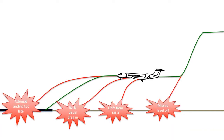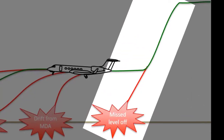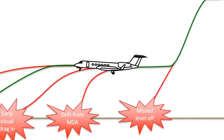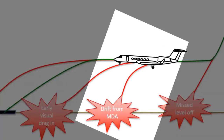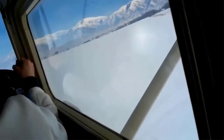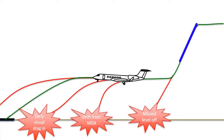Here you can see some of the common pilot errors when conducting the dive-and-drive technique. First, after descending from the final approach fix to the MDA, the pilot could lose situational awareness on when to level off and descend straight into the terrain. The next common error is the pilot can properly capture the minimum descent altitude but slowly allow the altitude to slip out of his cross-check, causing a slow and insidious drift into terrain. Next, the pilot can descend to his minimum descent altitude, drive in, make visual with the runway, and improperly assess a proper three-degree glide slope.